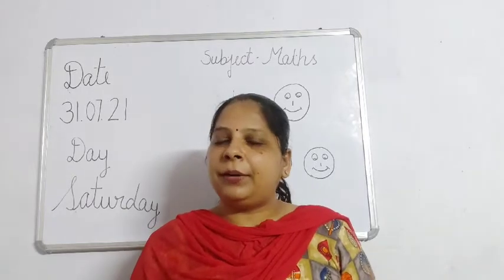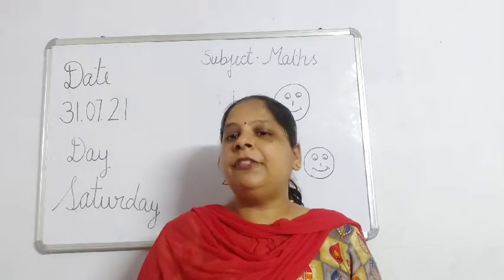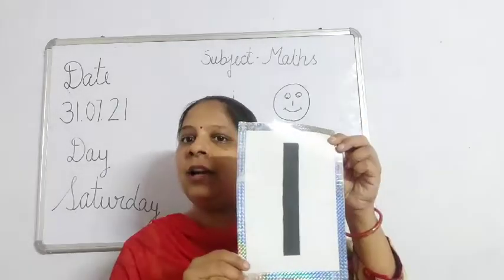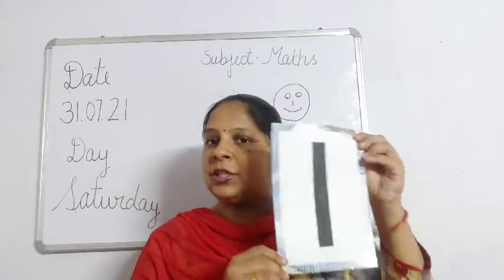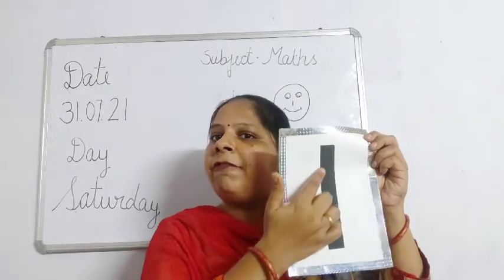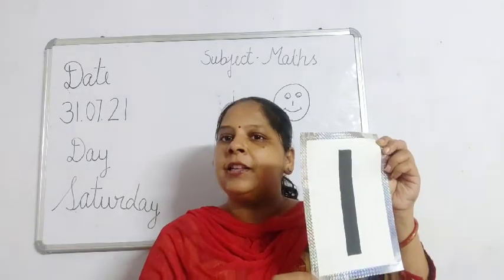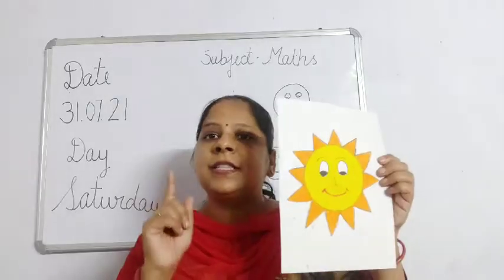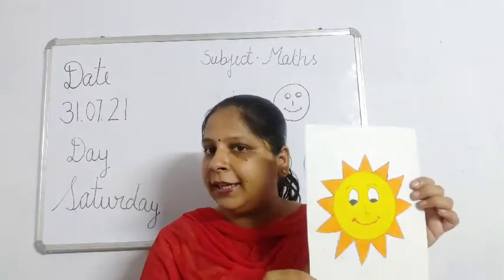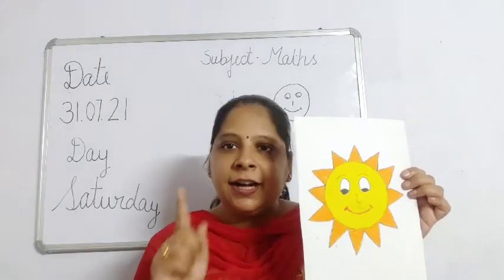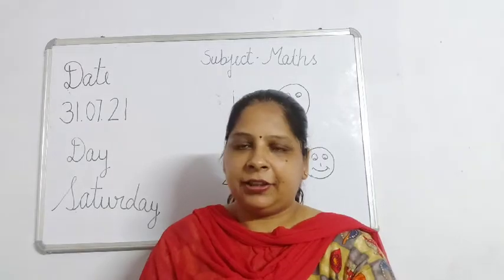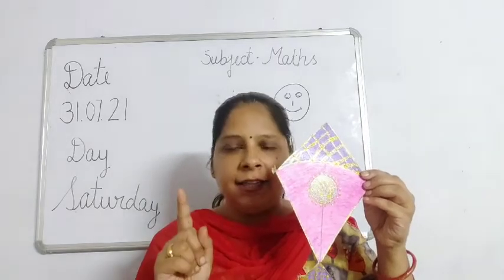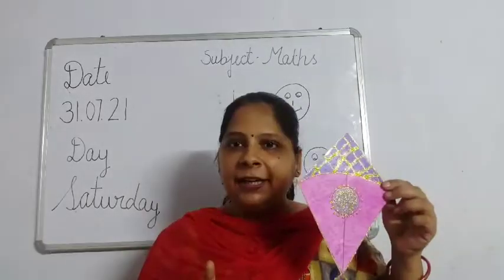We learnt a new number. So children, first we will revise that number. This is the number — number 1. This is 1 son. How many sons do I have? I have only 1 son. After that, how many kites do I have? I have 1 kite. This is 1 kite.